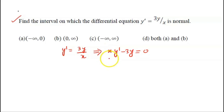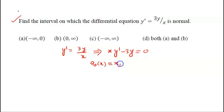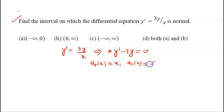To find the interval in which the differential equation is normal, we look at the coefficients of the different terms of y. Here we have y' and y, so two terms. The coefficient of y' — the highest order term — is a₀(x) = x. The next coefficient a₁(x) = -3, and the right-hand side r(x) = 0.